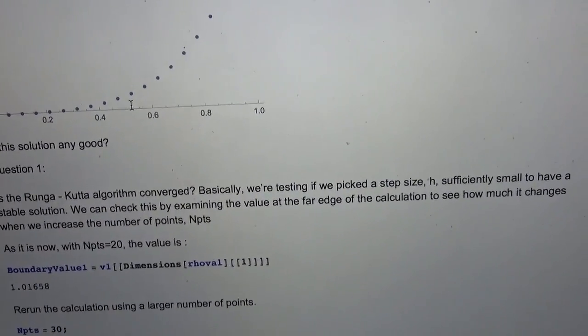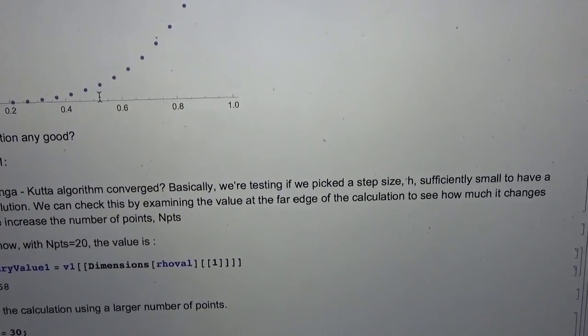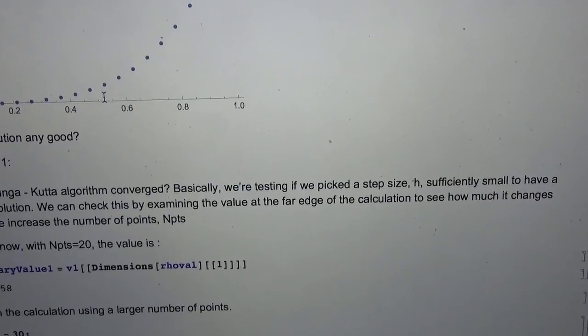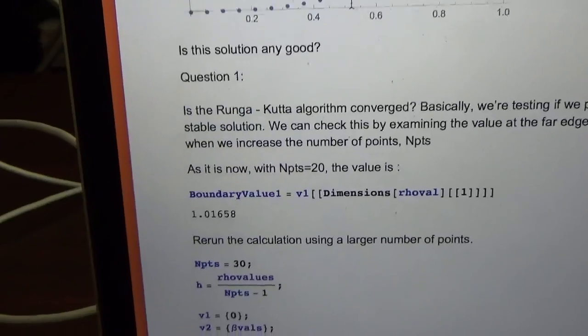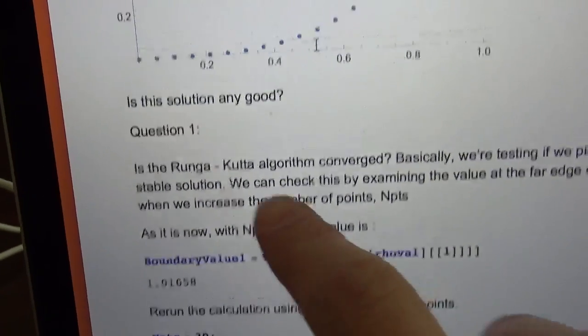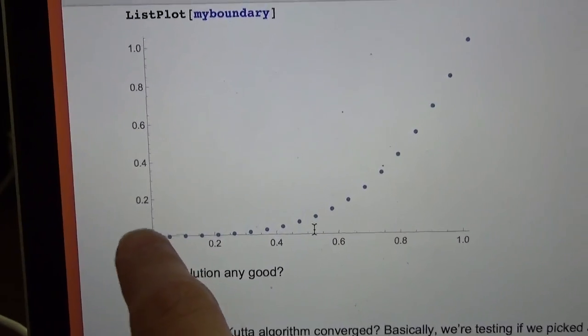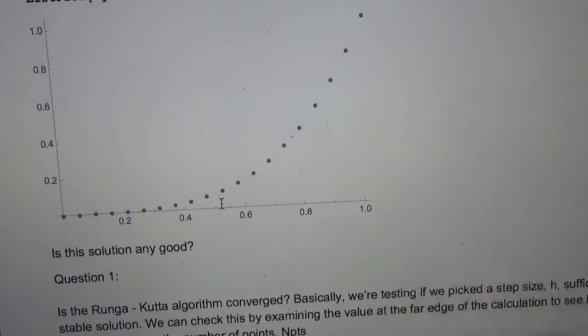In the case that you have a very stiff problem, and we say a stiff problem is one that doesn't converge well, you have to go to a really large number of points. But we're just using 20. What we can do is just change the number of points and see what happens.